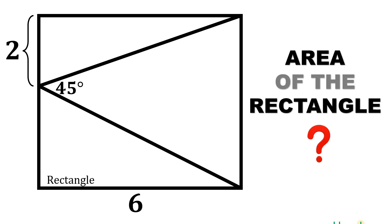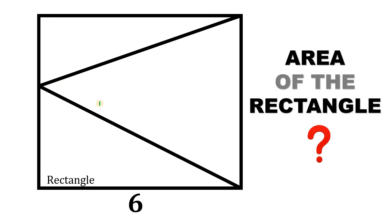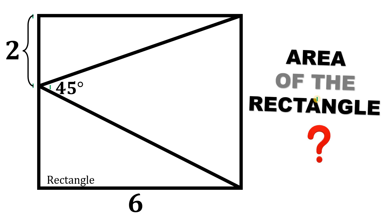Can you solve this geometry challenge? Here's the question. Let's start with a rectangle with the length equal to 6 units. Now let's draw two segments wherein this angle equals 45 degrees and this length equals 2 units. The question is: what is the area of this rectangle?